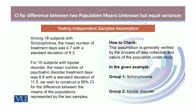Checking the first assumption, which is generally verified by the process of data collection: we can clearly see that we have two groups. Group one has schizophrenia and group two has bipolar disorder. The people with schizophrenia are entirely different from the people with bipolar disorder. Hence we can assume that both groups are independent.